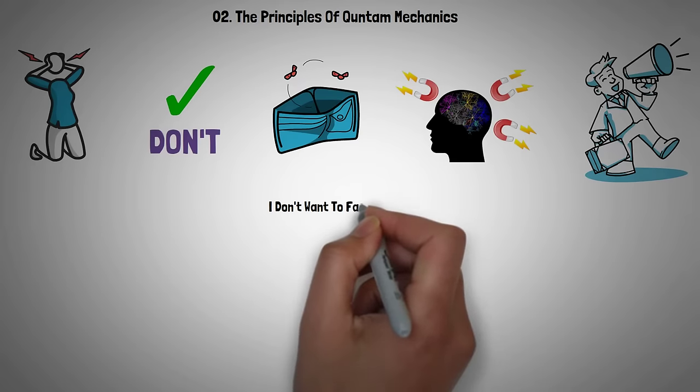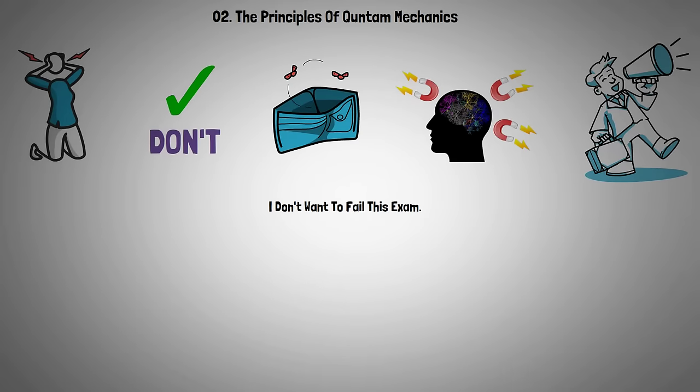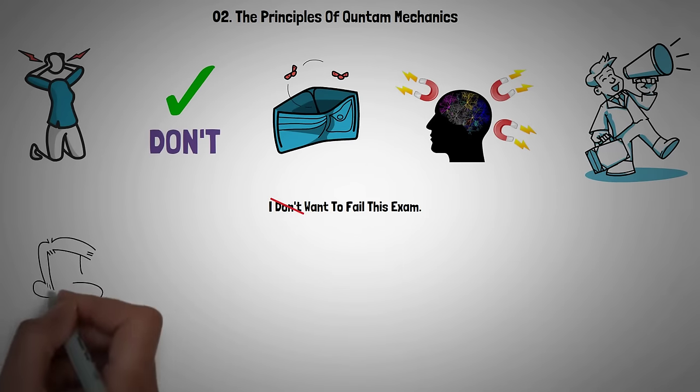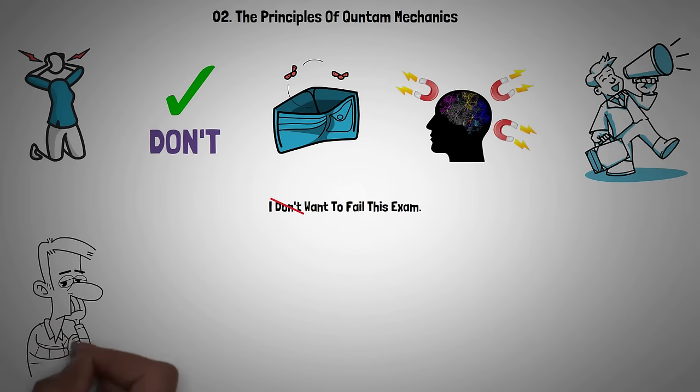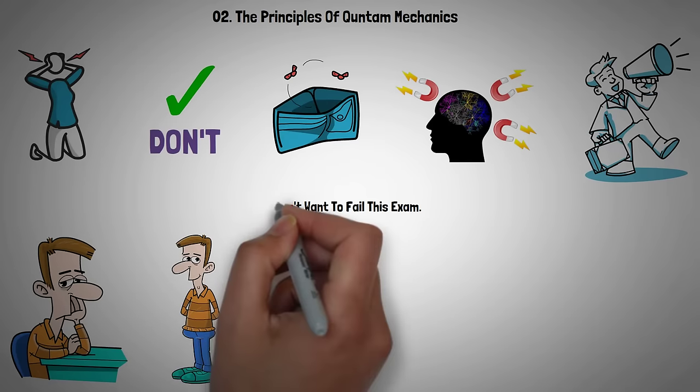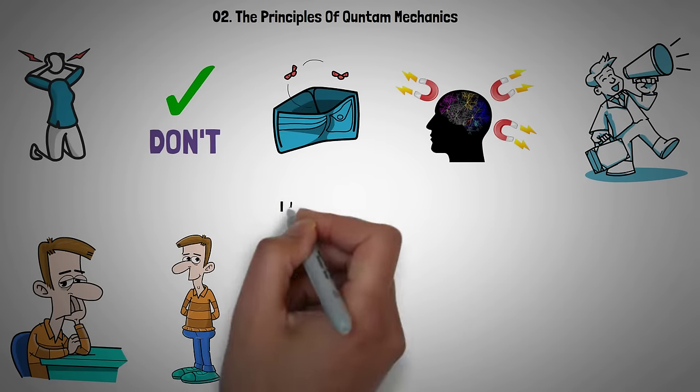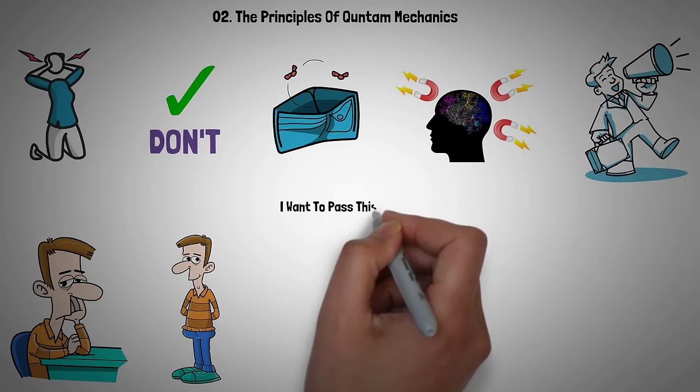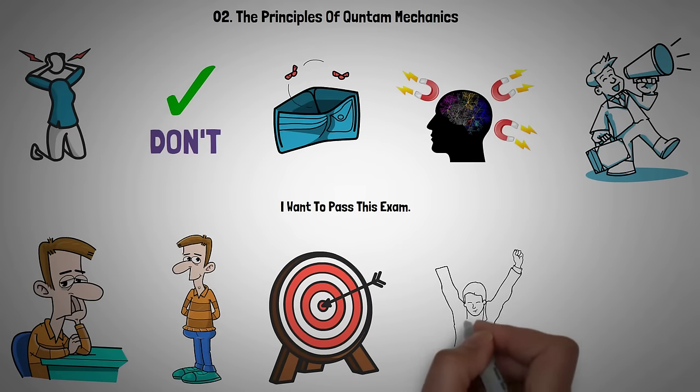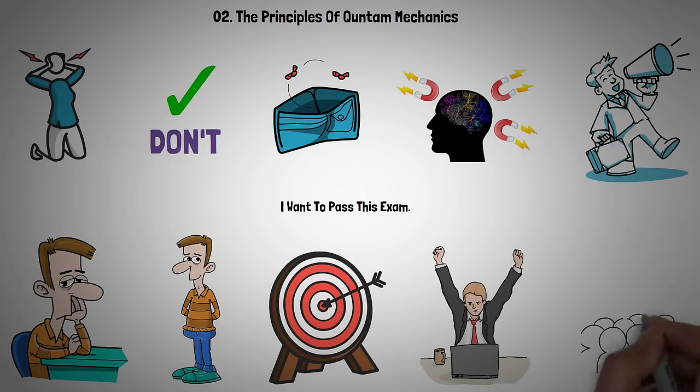For example, if you're thinking I don't want to fail this exam, what the Law of Attraction comprehends is I want to fail this exam. That's why it's crucial that you avoid putting out negative energy. You can revamp your thought life by replacing that negative energy with a positive message. Instead of concentrating on what you don't want, project I want to pass this exam, or I want to accomplish my goal. You should also be highly specific where you can, so focus on adding extra details like I want to accomplish my goal of getting that promotion this year.